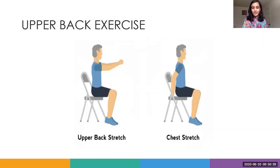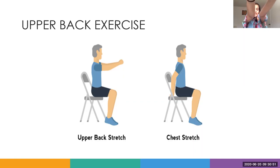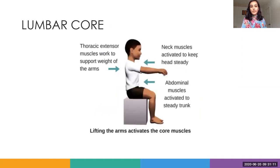Moving on to the upper back stretch. Lift your arms forward, clasp your hands together, and reach as far forward as you can. Then slowly bring your hands back and hold the back of your chair to get a good extension, opening the chest out. Hold each position for 30 seconds.